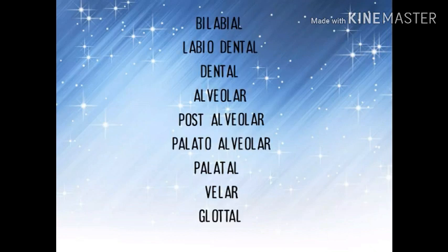Now we will see the place of articulation — where in the mouth the sounds are made. First is bilabial. 'Bi' means two, 'labial' means lips. So we use both lips. For example, P and B — in these sounds you bring both lips together.